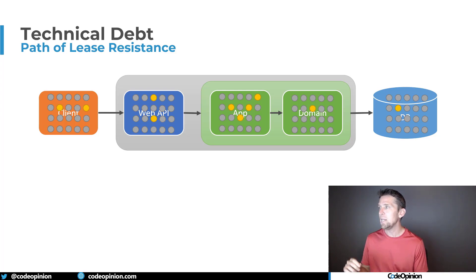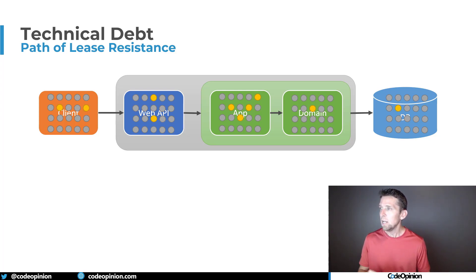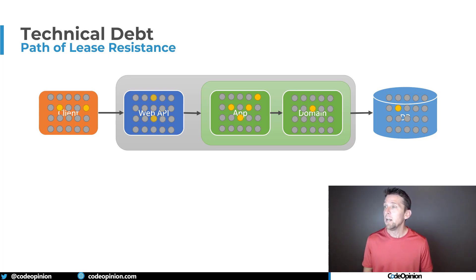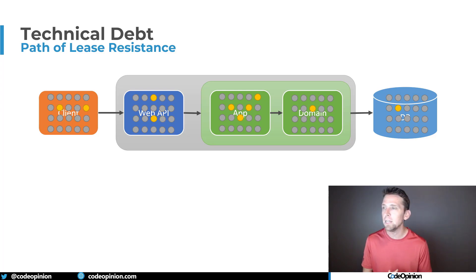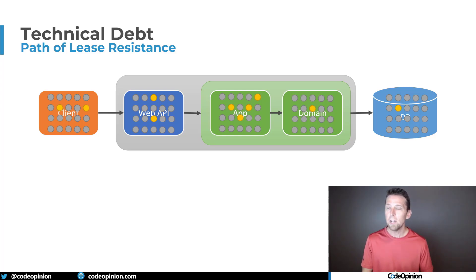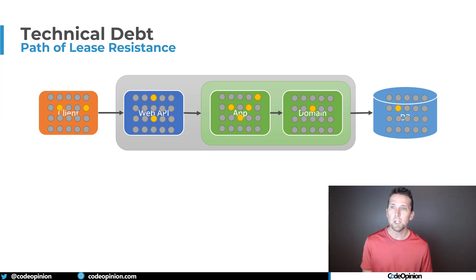So when we're doing that, there may be a couple of pieces in the client that we need to change — this could be some components, this could be pages. In our web API, maybe there's a couple of different controllers or routes that we need to change for this new feature that we're adding. In our application code there are changes we need to make there, something within our domain that we potentially need to change, and then obviously all the way back to our database.